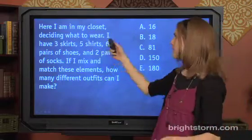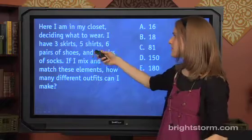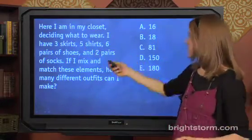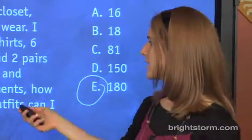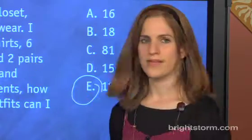It's just three times five times six times two. Five times six is 30, times two is 60, times three is 180. So we have 180 different kinds of outfits I can make with these combinations.